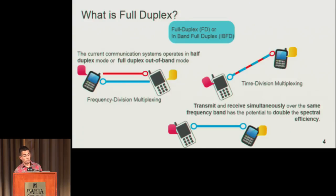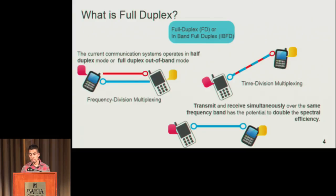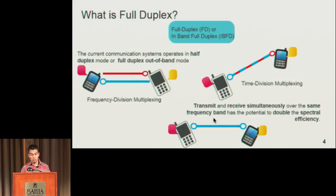What is full duplex? The current communication systems that we are using are operating in half-duplex mode, or are full duplex but not in true full duplex. We are using two different frequency channels — one for the uplink and the other for the downlink. On the other side, we can use the same channel, but we need to share the time for the uplink and downlink. So if we can transmit and receive simultaneously over the same frequency, we can have the potential to almost double the spectral efficiency.